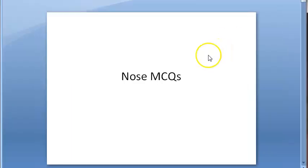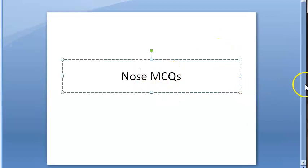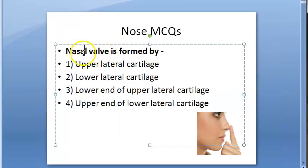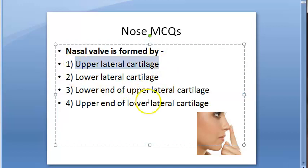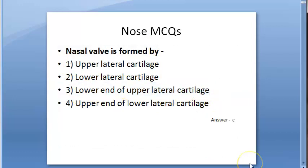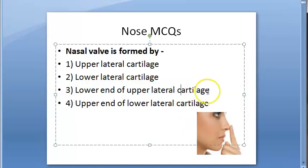Hello, in this video let us look at some MCQs on the nose. The nasal valve is formed by the upper lateral cartilage — specifically the lower end of the upper lateral cartilage. The answer is C.